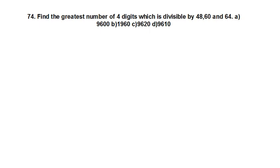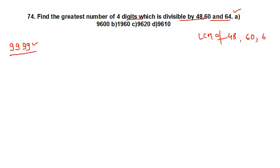Next problem: find the greatest number of 4 digits which is exactly divisible by 48, 60 and 64. This is a very common question. The greatest 4-digit number is 9999, but that is not our answer. Step 1: find the LCM of 48, 60 and 64. The LCM of 48, 60 and 64 is 960.